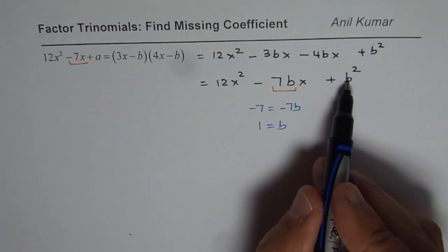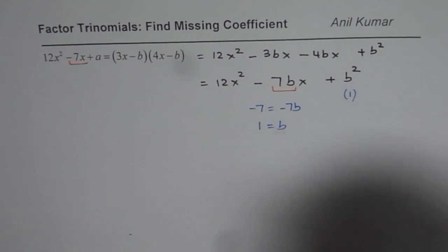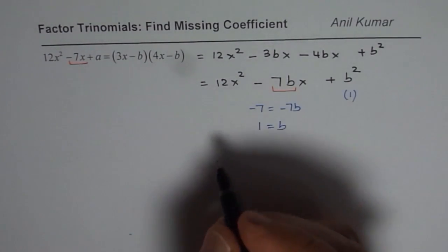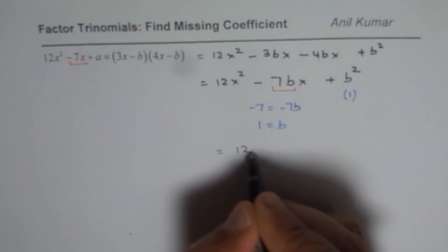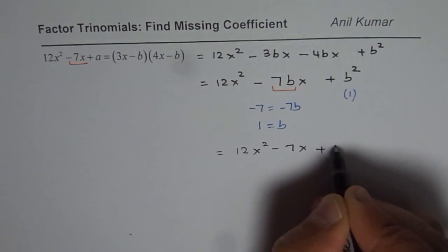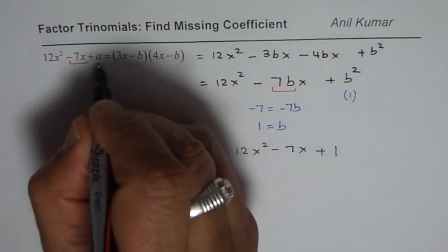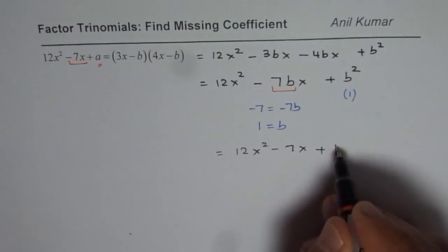Now if the value of b is 1, I will get 1 squared here, right? So substitute b as 1 here. So when you do that, what do you get? You get here as 12x squared minus 7x plus 1, right? Now when you compare, you get a as 1.